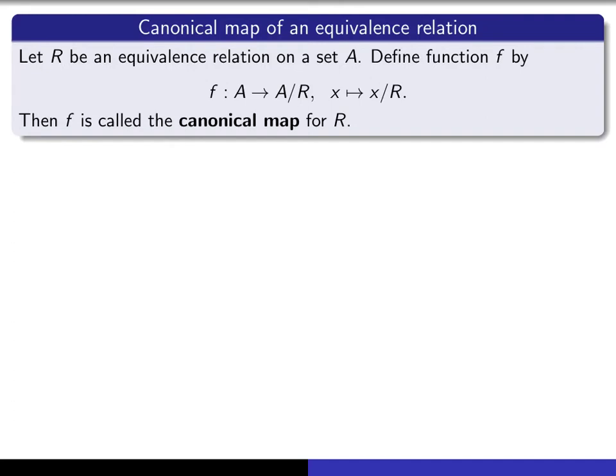And finally, I want to talk about what we mean by the canonical map of an equivalence relation. So if R is any equivalence relation on a set A, then remember we've defined A/R to denote the set of equivalence classes of this relation. For each x in A, x/R is the equivalence class of x. It's very natural to define this mapping from A into A/R by x maps to its equivalence class relative to this relation.